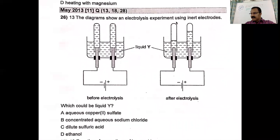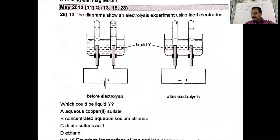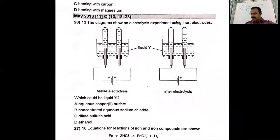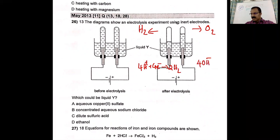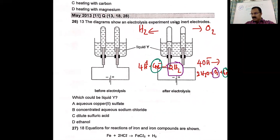The diagram shows an electrolysis experiment using inert electrodes — before and after. After electrolysis, at the negative electrode you get hydrogen and at the positive electrode you get oxygen. For four electrons: 4H⁺ + 4e⁻ → 2H₂ at cathode, and 4OH⁻ → 2H₂O + O₂ + 4e⁻ at anode. For the same number of electrons (four), two moles of H₂ and one mole of O₂ are formed — ratio 2:1. So it is hydrogen and oxygen.